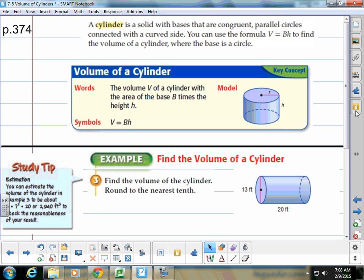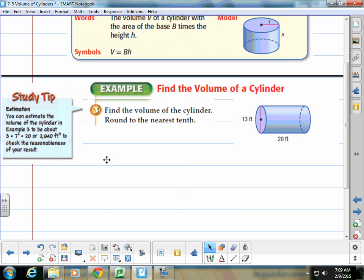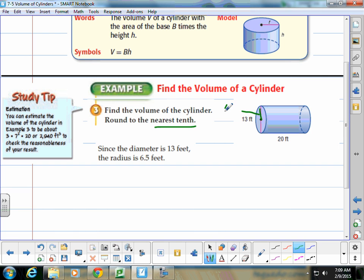A cylinder now is different than a prism. A cylinder is a solid with bases that are congruent parallel circles connected with a curved side. So this is like a soup can, an oatmeal canister. You have to use a formula: base times height again, but now this time the base would be the area of the circle. So we can estimate the volume of a cylinder in example 3 to be about 3 times 7 squared times 20. So since the diameter here is 13 feet, we are really going to use the radius. We're going to cut that in half and know that the radius then would be 6½.